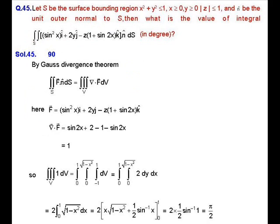Solution of question number 45: here S is the surface bounding the region x² + y² ≤ 1, x ≥ 0, y ≥ 0, and |z| ≤ 1. When we observe this closed surface, it is a one-fourth part of the cylinder x² + y² = 1 where x and y are positive and z lies between minus 1 to plus 1.